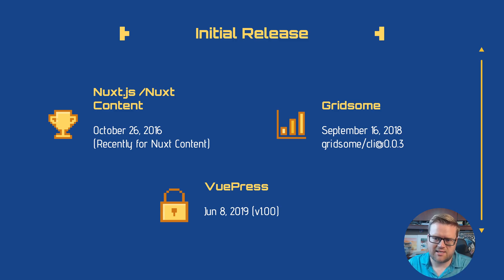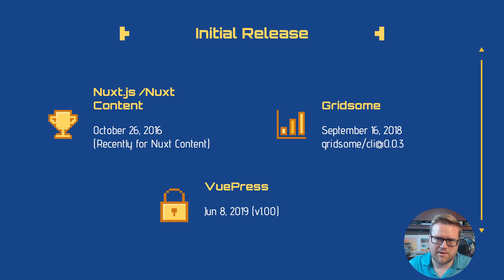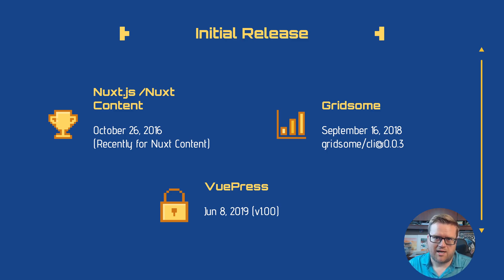Gridsome is our next in line. It came out September 16, 2018, at version 0.0.3, and they have definitely evolved a lot. Gridsome is more of a JAMstack-powered creator that uses headless CMSs — bring your own data. And then of course there is VuePress, released June 8, 2019. It's actually a part of the official Vue.js apps, officially supported by them, and it's a great way to create technical documentation sites.